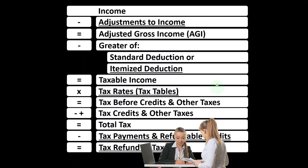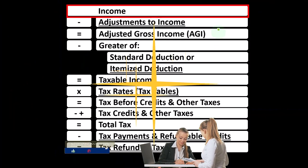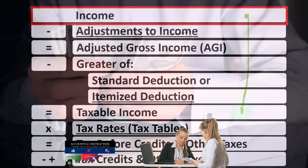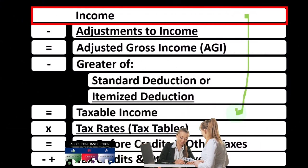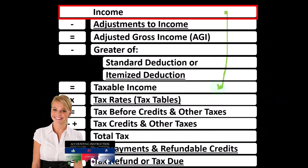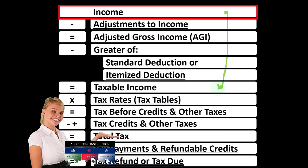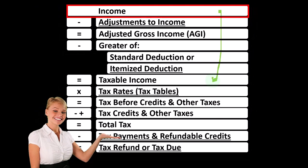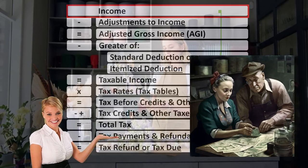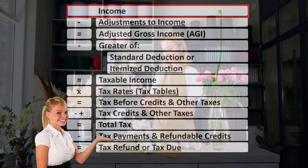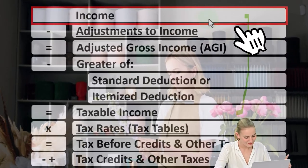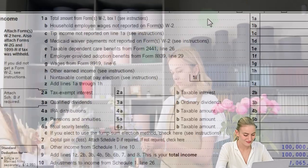Looking up the income tax formula, we're focused on line one income. In the first half of the income tax formula is in essence an income statement, although it's just an outline and a scaffolding, with other forms and schedules flowing into it. For example, the Schedule C — the business income — is in essence an income statement in and of itself: income minus expenses, with the net income flowing into the income line of the income tax formula.